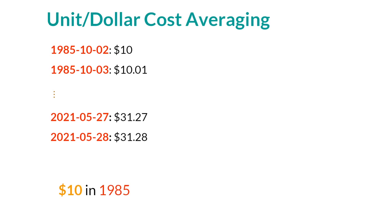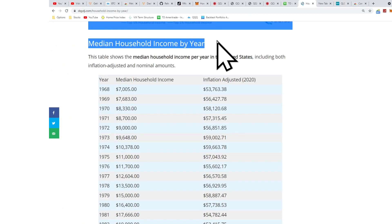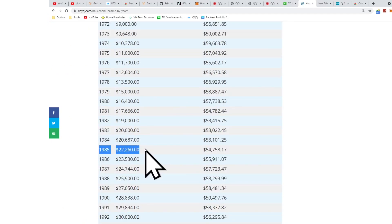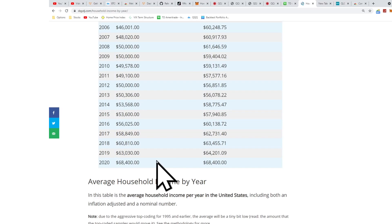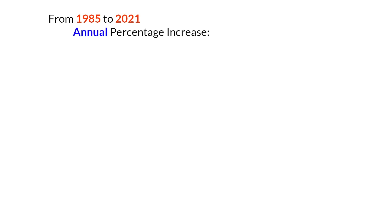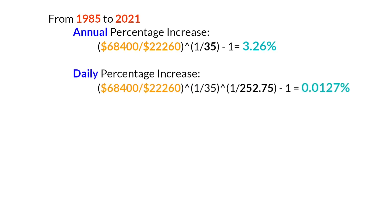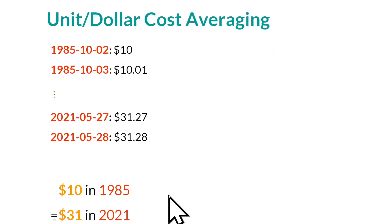In 2021, we would be investing $31 per day, and on each next day, one cent more. The reason $10 in 1985 is equivalent to $31 in 2021 is that median household income has been increasing. In 1985, the median household income was $22,000; in 2020, it is $68,000. From 1985 to 2021, the annual median income percentage increase is 3.26%, and the daily percentage increase is 0.01%.